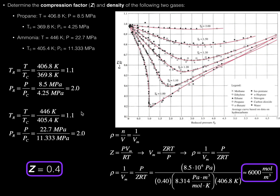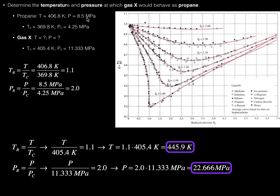This kind of problem arises if you know, for example, the temperature, the pressure, the critical temperature, and the critical pressure for at least one gas. Now we're going to do a problem where we know it for one gas, but we have an unknown gas which we're going to call gas X — not the medication of course. What we want to do is determine the temperature and pressure at which gas X would behave as propane would. So this is going to be a principle of corresponding states problem.